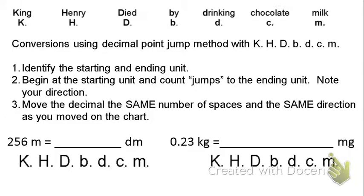We're going to identify the starting and ending unit. Begin at the starting unit and count jumps to the ending unit. Note your direction. So let's look at converting 256 meters to decimeters. Meters is the base unit. We're going to be moving to decimeters, so we're going to make one jump.